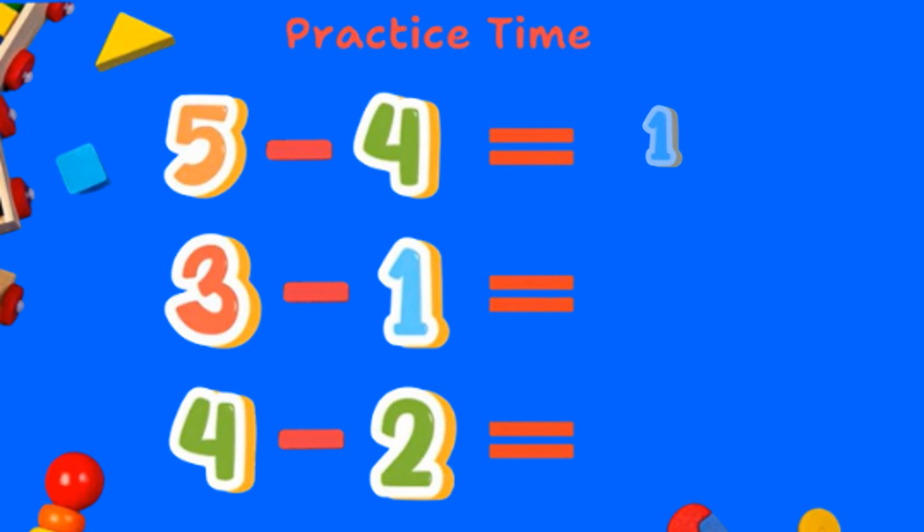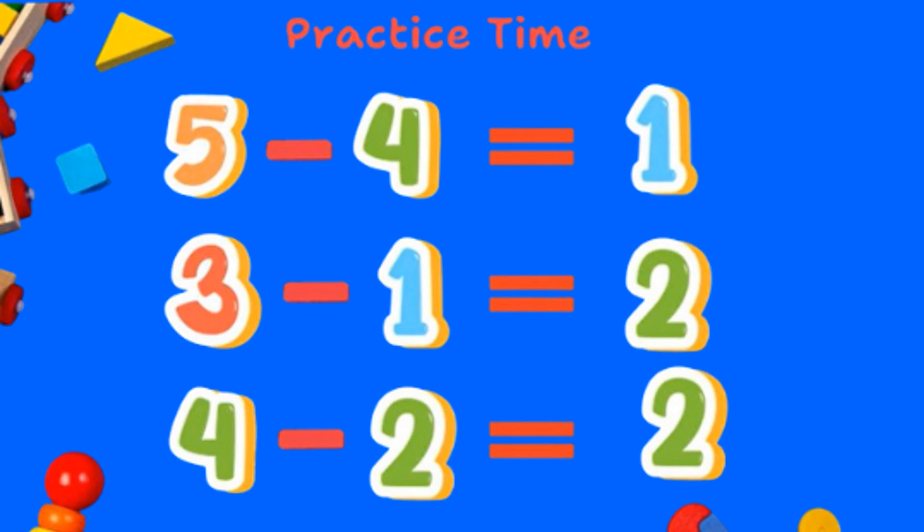Five minus four equals one. Three minus one equals two. Four minus two equals two.